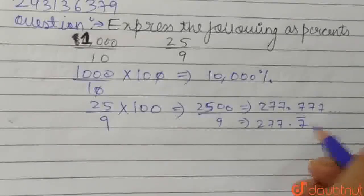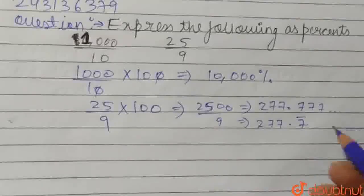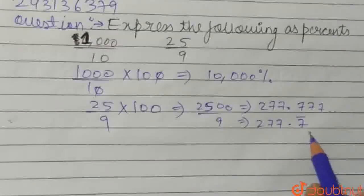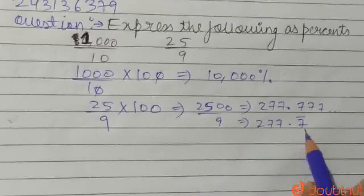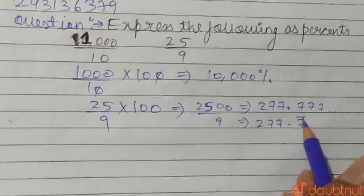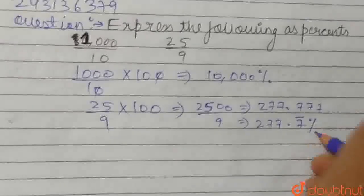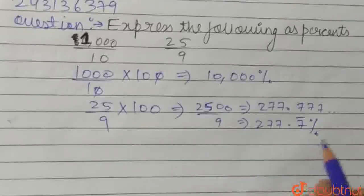So it means that 7 is repeating to infinity because it is not terminating, it is always repeating. So we can place a bar on 7. So the answer is 277.7 bar percent.